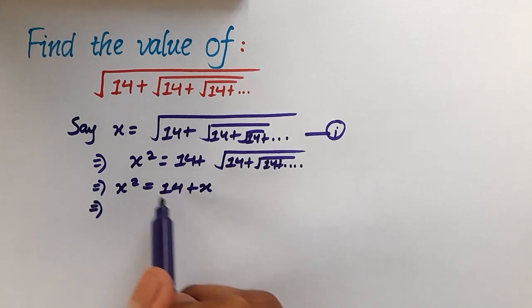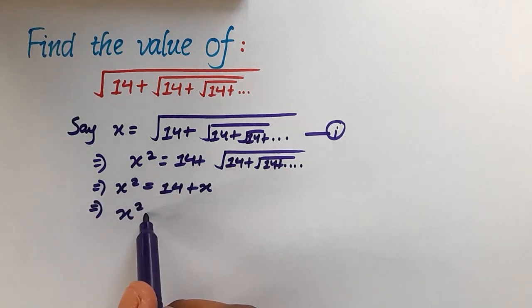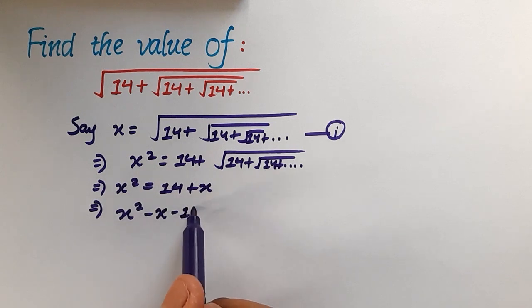Let's bring all the terms on the same side, so we will have x square minus x minus 14 equal to 0.